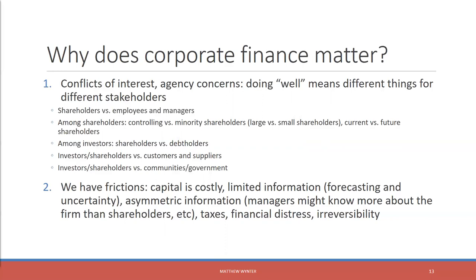We also have agency concerns — meaning that the people who manage the firm are distinct from the owners, so we really don't always know what our managers are doing. We also have frictions. Capital is costly — anyone who's ever taken out a loan or used a credit card knows it costs money to get money. We have to make decisions with limited information, often forecast, and deal with uncertainty. We have asymmetric information, so managers might know more about the firm than shareholders. And we have taxes — we'll look at how taxes have real effects on the way the firm will finance itself.